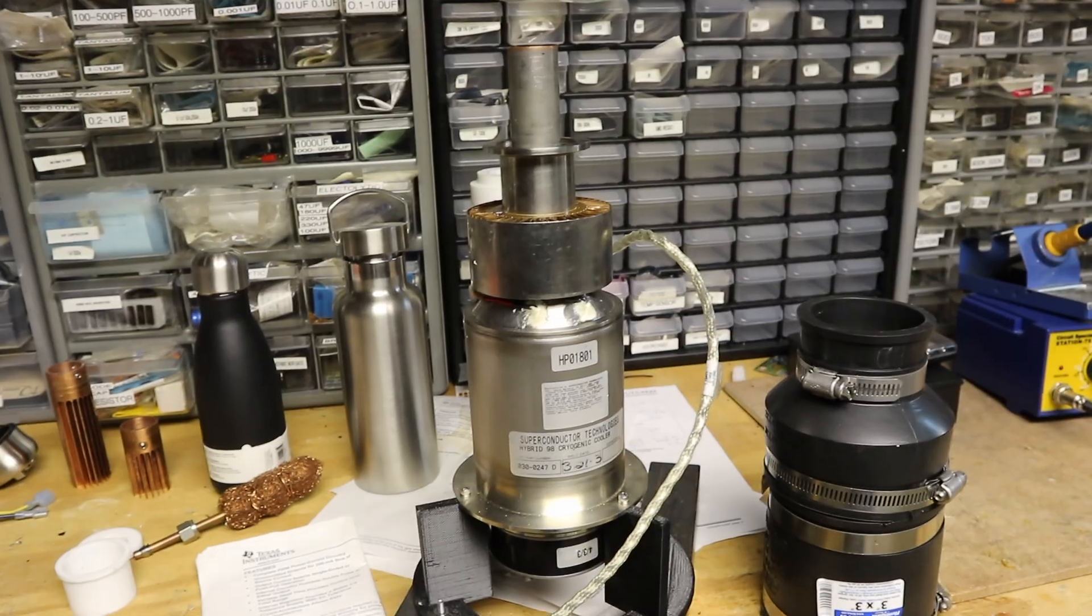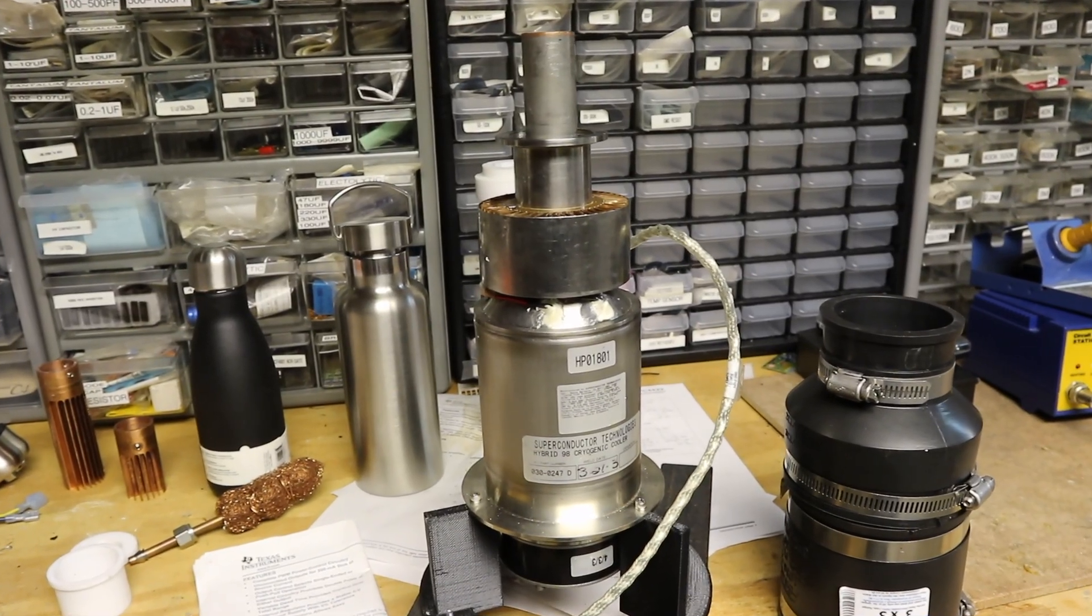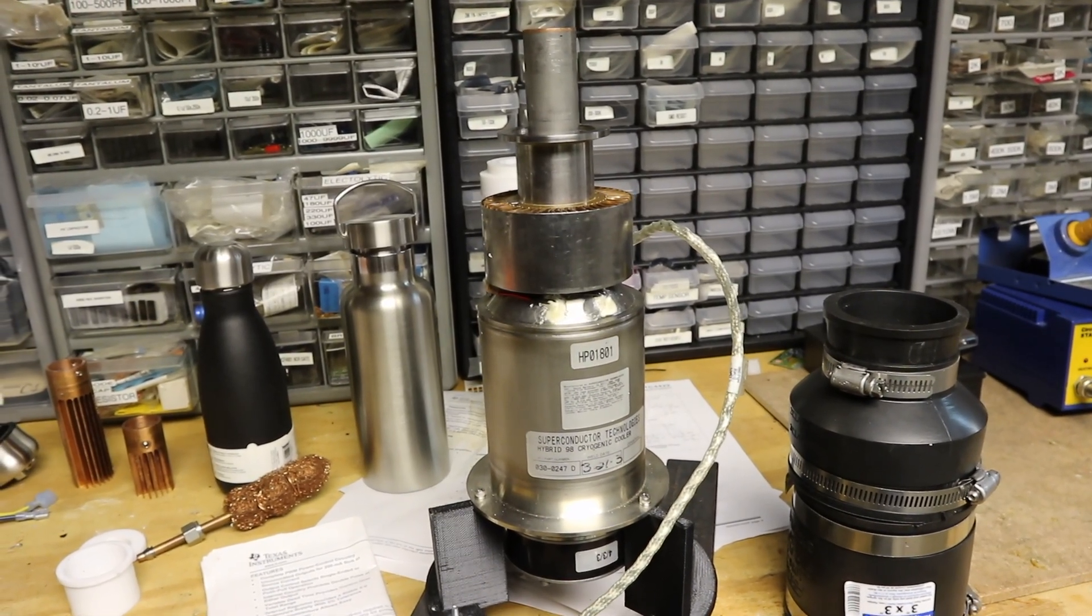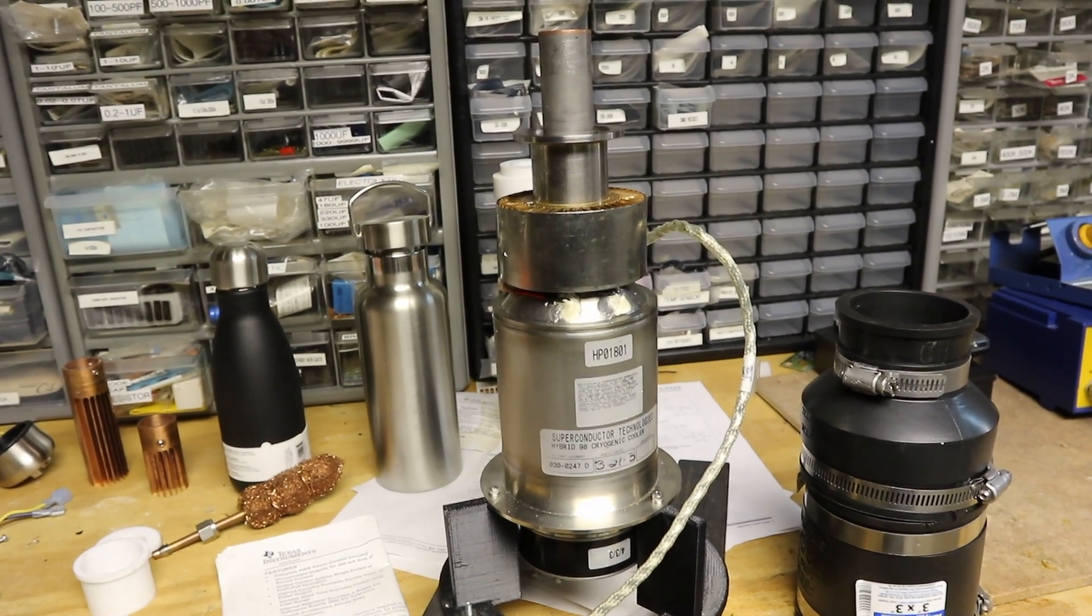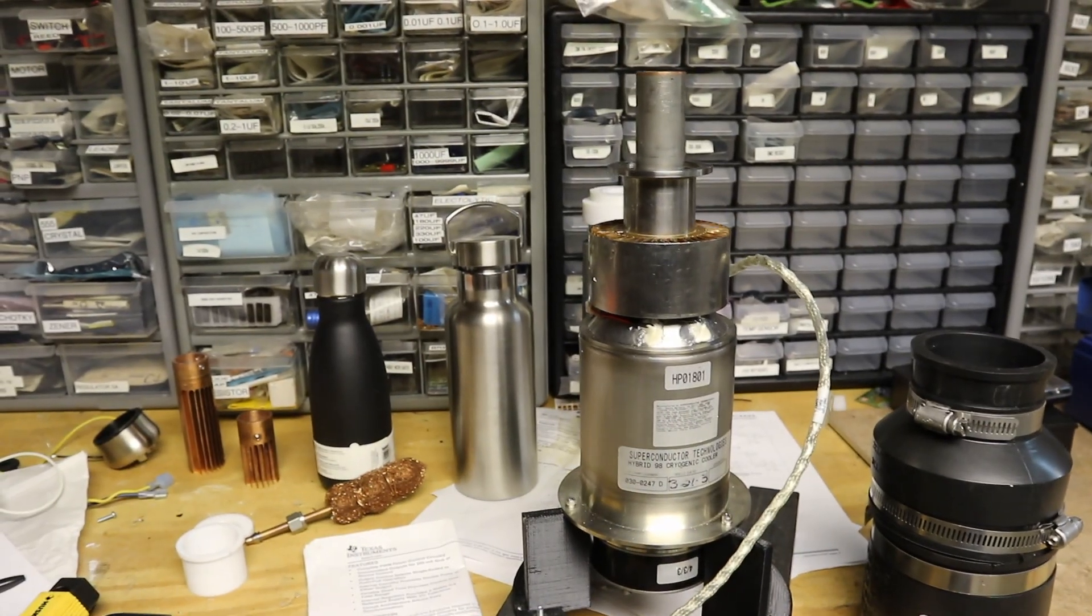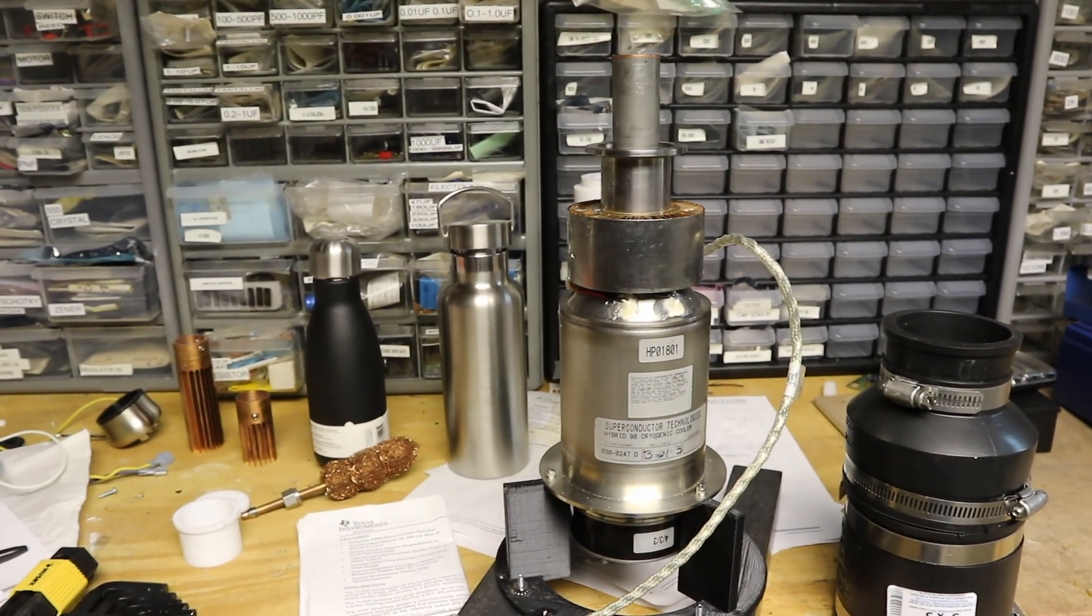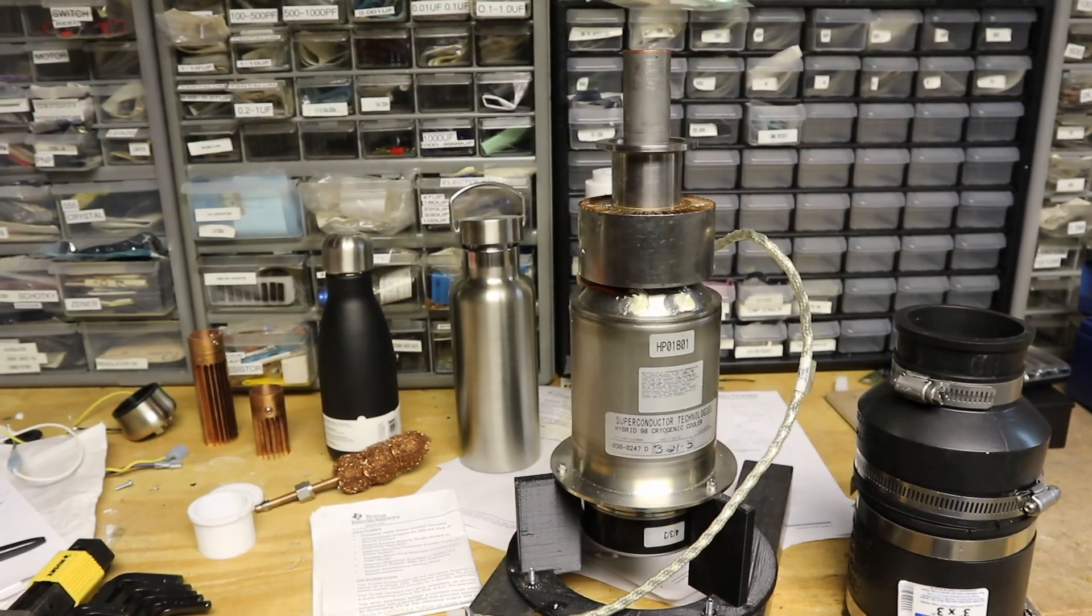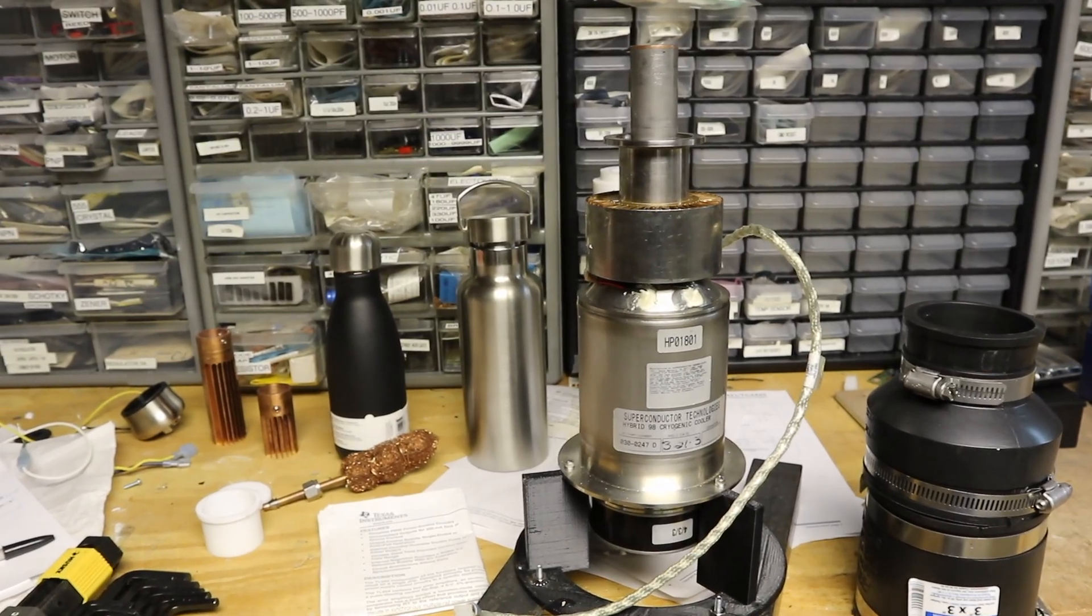So I have my Stirling Hybrid 98 cryocooler and I want to try and make a water jacket to cool it better, maybe get faster cryogenic temperature acquisition.